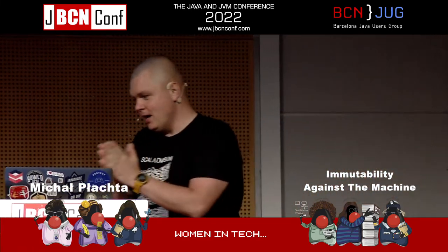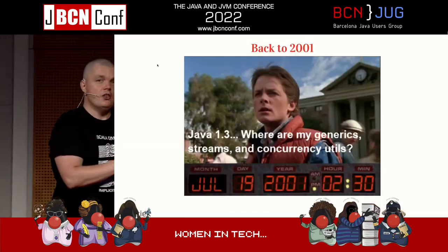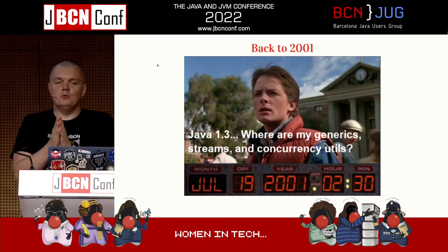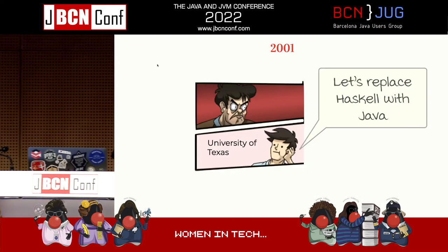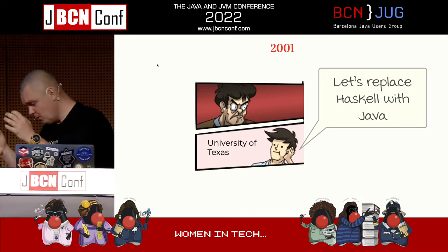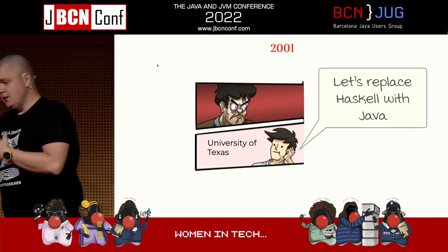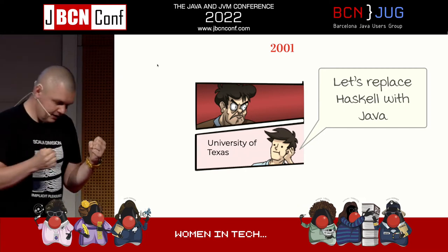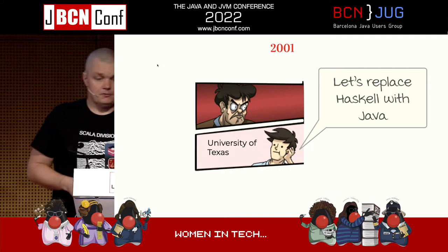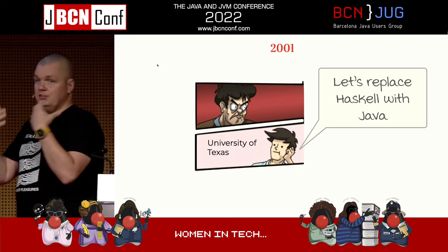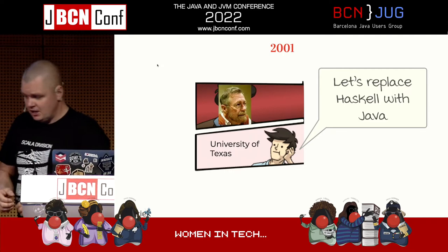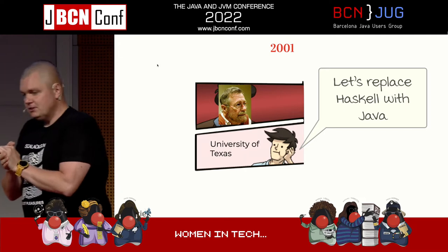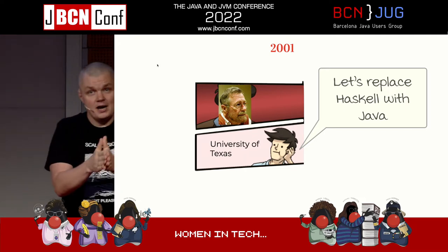The year is 2001. We have Java at version 1.3 — no generics, no streams, no concurrency utils; a very, very simple language. But it was getting more and more popular, so popular that many universities around the world were trying to use it as an introductory language for their students. One of those universities was the University of Texas.